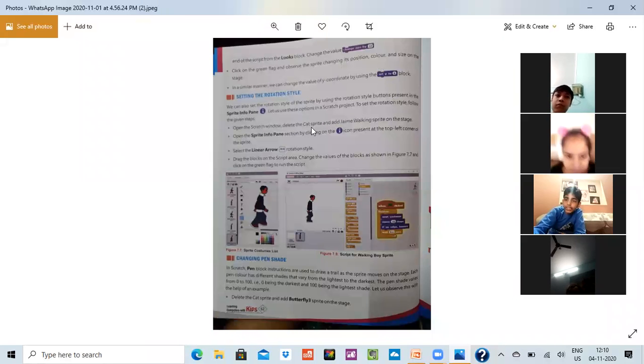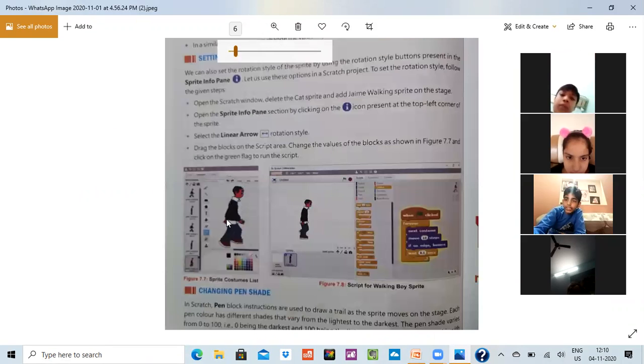Next we will come to setting the rotation style. Agar aap chahein to aap apni image ko rotate bhi kar sakte hain. For example, right now the image is in a standing position, but if I want I can change the color. I'm not liking his shirt color, I can change it. I can even make him bend. I can make him sit. Whatever I want to do I can do with this image.